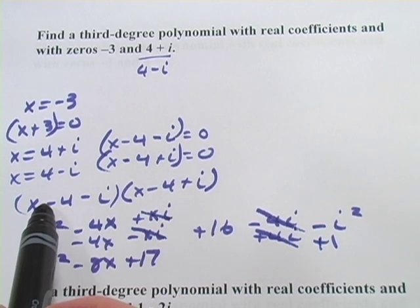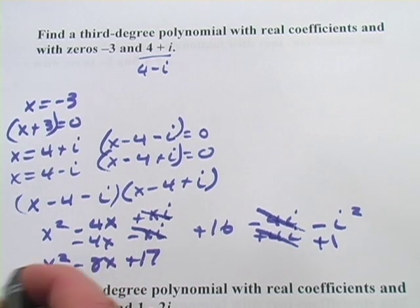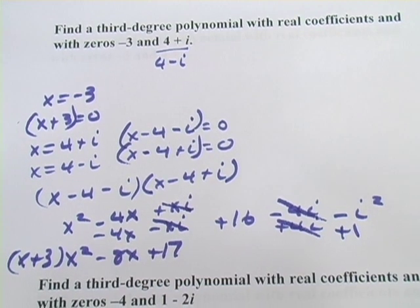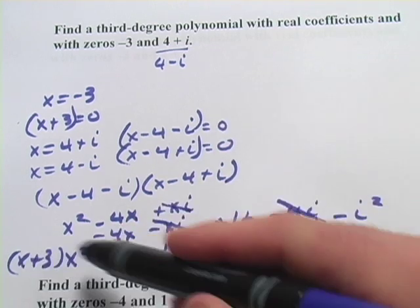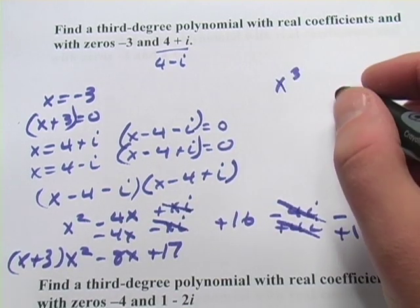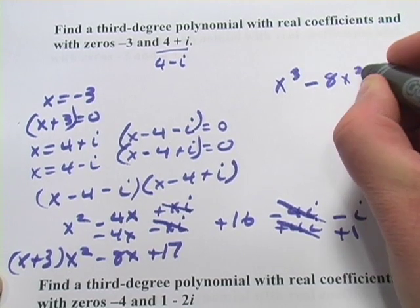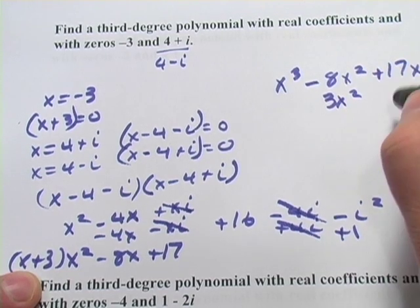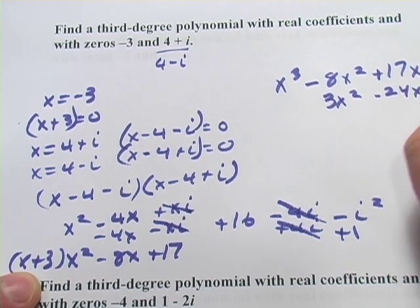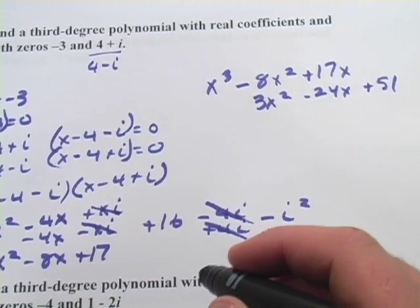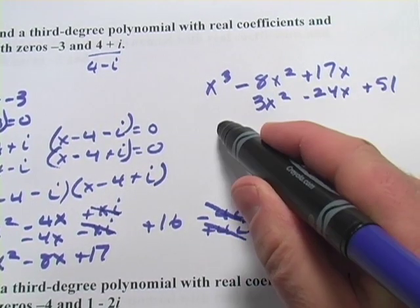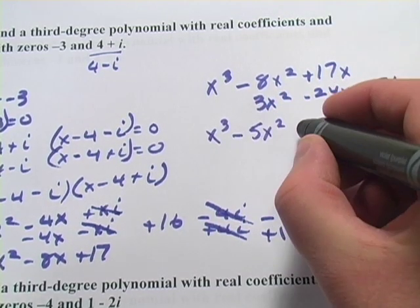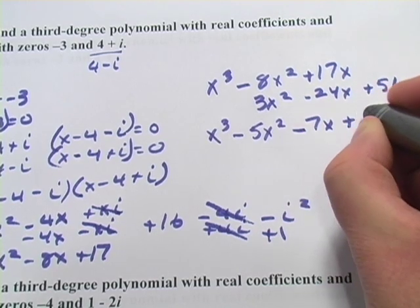We're not done yet — we've only multiplied two factors together. We still have the third factor, x plus 3, which needs to be multiplied in. Taking x times all terms: x times x squared is x cubed, x times negative 8x is negative 8x squared, x times 17 is 17x. Then 3 times x squared, 3 times negative 8x, and 3 times 17 is 51. Adding the like terms gives us x cubed minus 5x squared minus 7x plus 51.